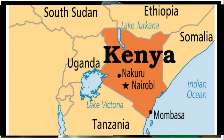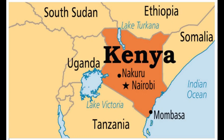Both MPs and Senators serve a five-year term. The President of the Republic of Kenya, together with the Deputy President and the Cabinet Secretaries, comprise the Executive. The President shall nominate and, with the approval of the National Assembly, appoint Cabinet Secretaries. A Cabinet Secretary shall not be a member of Parliament. The President is elected directly for a five-year term. In order to win, a candidate must garner 50% plus one votes and 25% in half of the 47 counties.